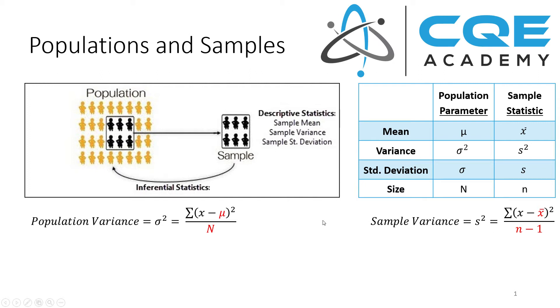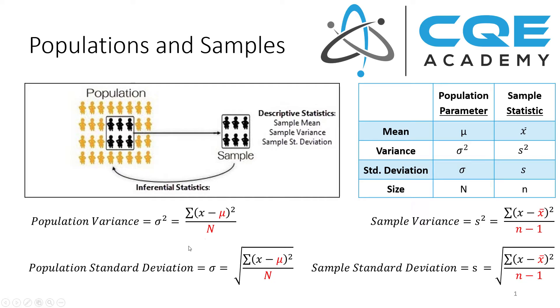To calculate the standard deviation, all we do is take the square root of the variance. When we're calculating the population standard deviation, or sigma, we're just going to take the square root of this equation. The same thing is true for the sample standard deviation, which is s.